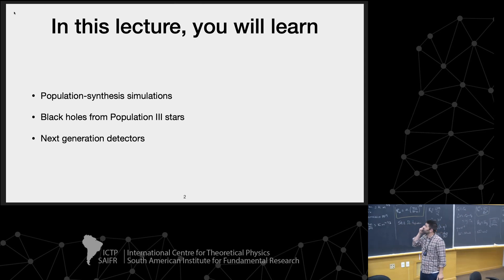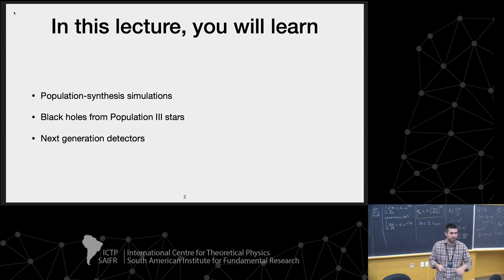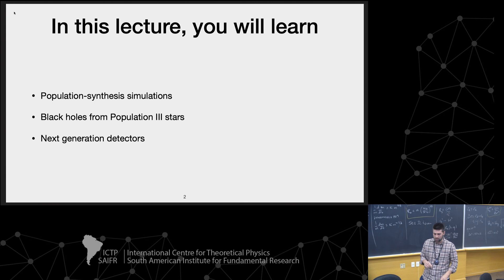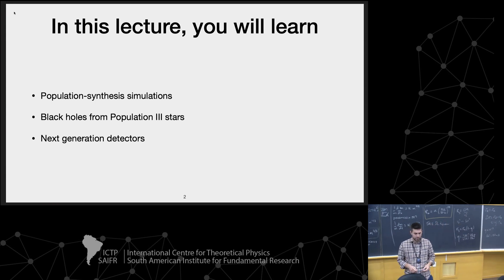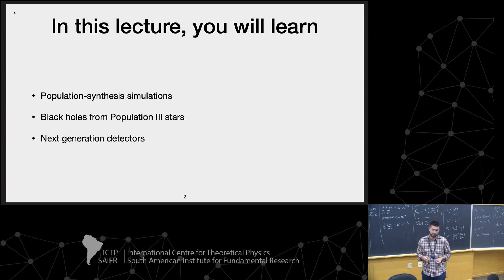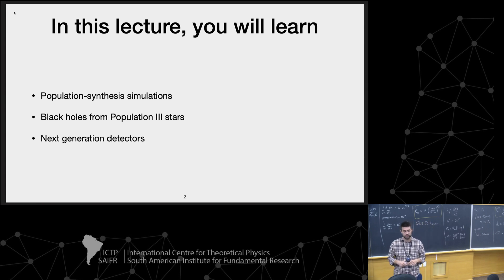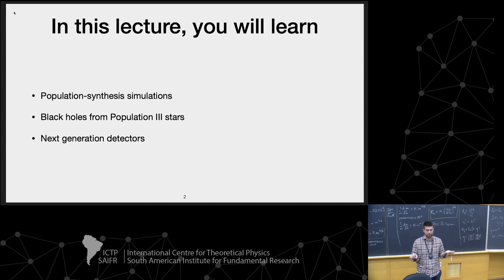We are going to talk about population synthesis in more detail. I already mentioned population synthesis many different times so far. Now we are going to look at how these simulations work in more detail. We will see an example of input and output of these simulations, specifically on black holes from population three stars. We will also introduce this new kind of stars.